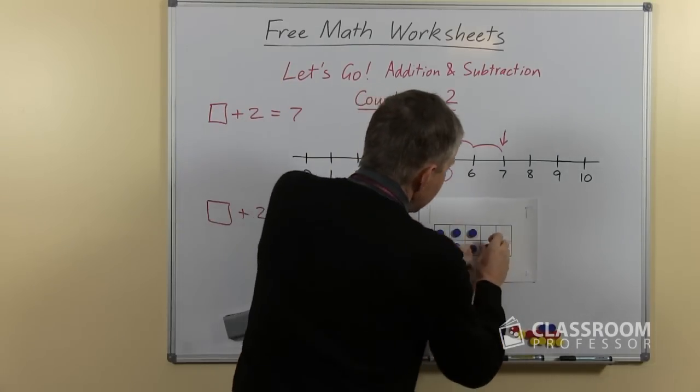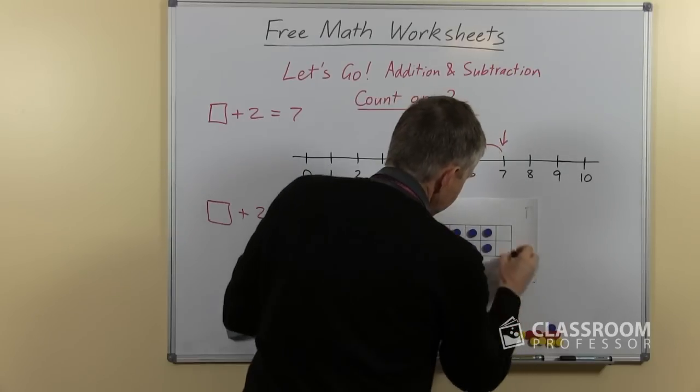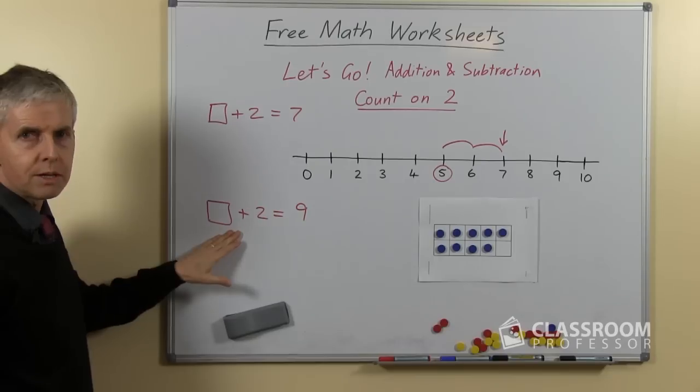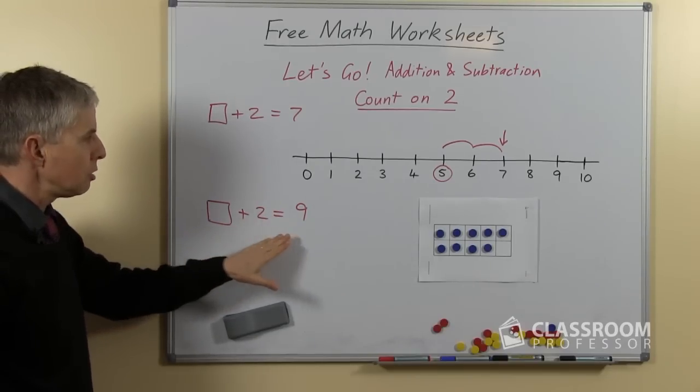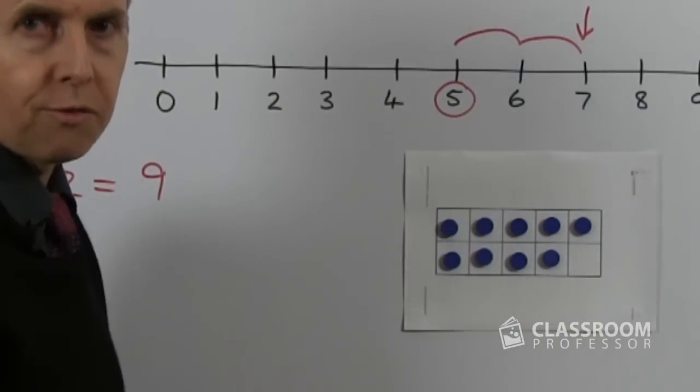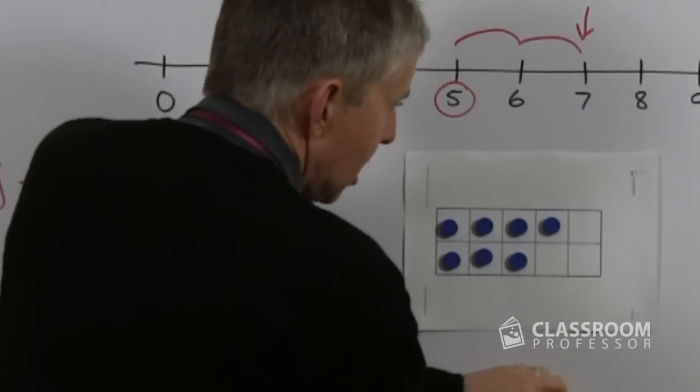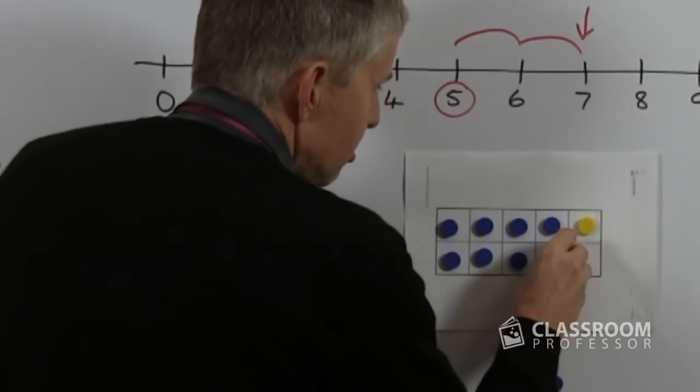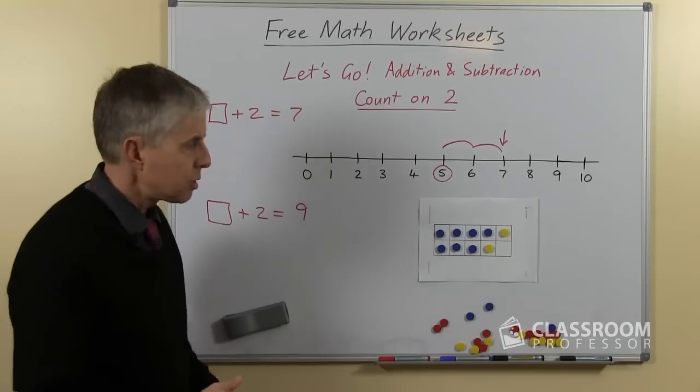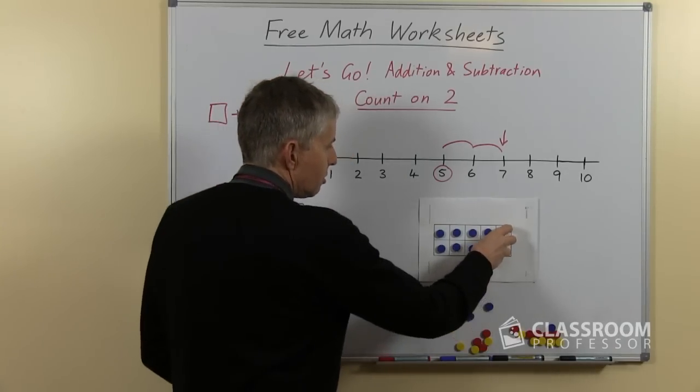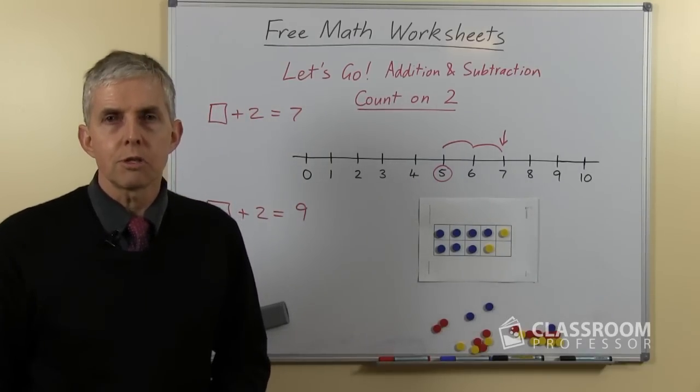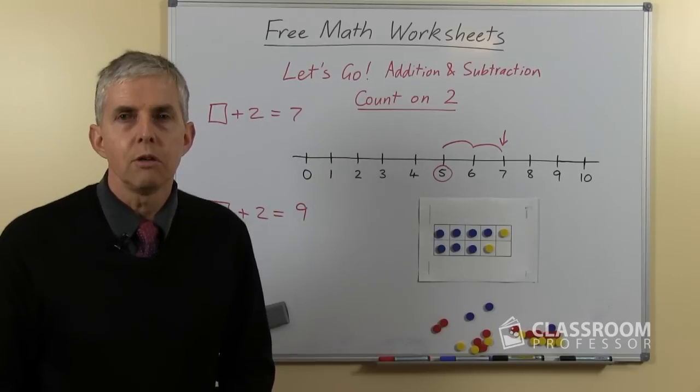And the last one, let's put out 9 counters for this one. Here are 9 counters, what did we start with if we started with a number and we added 2 and the answer is 9? So imagine the number that was there before we put 2 more. Let me change the colour of the last 2 to a different colour. Can you see the number that was there before the 2? I'm sure you can, it's 7, 7 and 2 makes 9. Alright so that's the count on 2 strategy and I will talk to you next time.